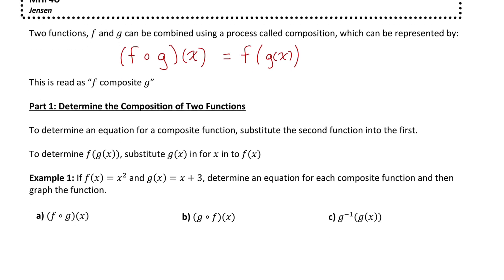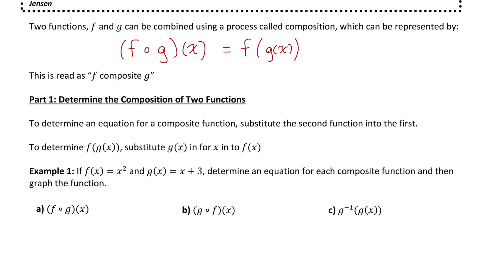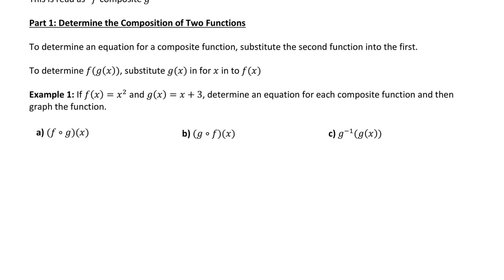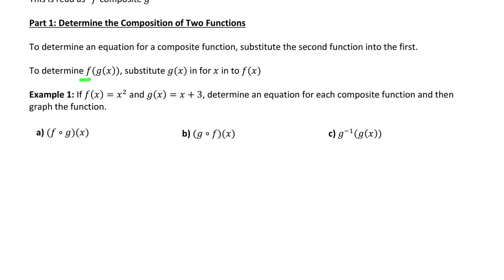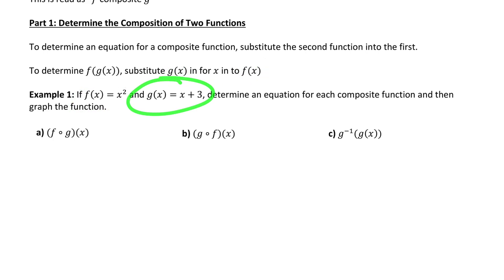Now let's move on to part one, where we see how we can create composite functions. To determine an equation for a composite function, we just substitute the second function into the first function. So to determine f of g of x, we substitute g of x in for x into f of x. Let's work with these two functions: f of x is equal to x squared, and g of x is equal to x plus 3.